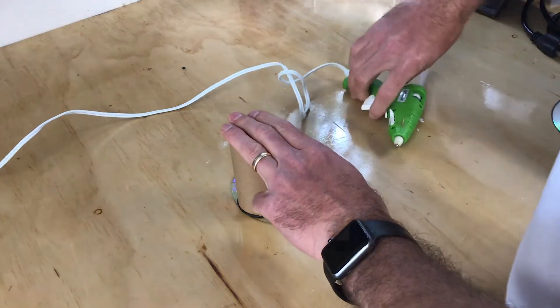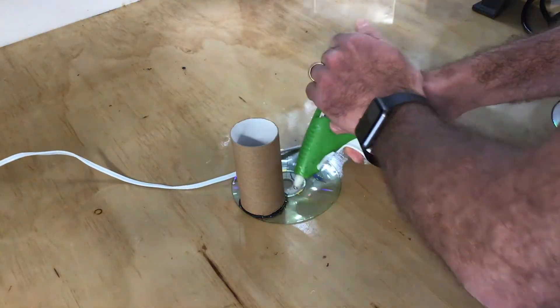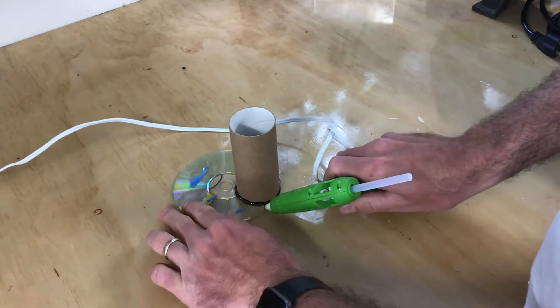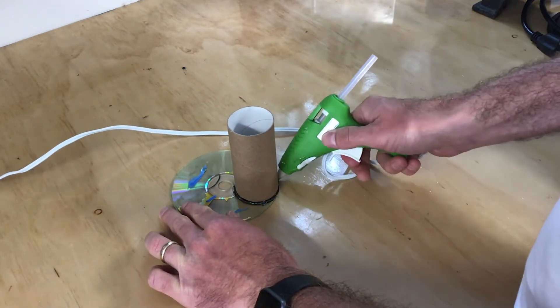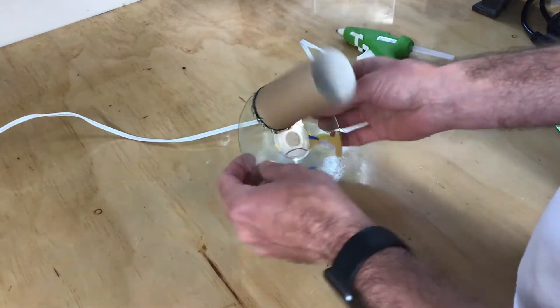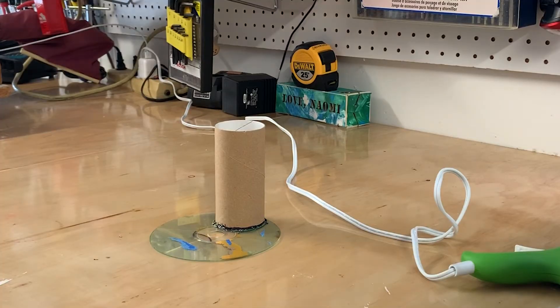Now I'm going to take my hot glue and attach the toilet paper roll to the disc. If you don't have hot glue, you could use tape for this part. It's a little messy here, but I think it would still work.